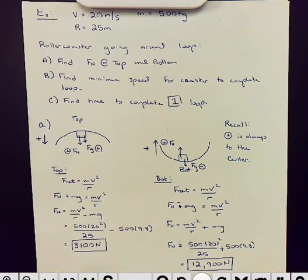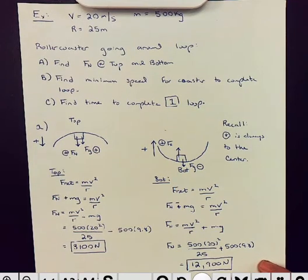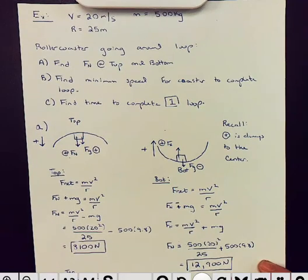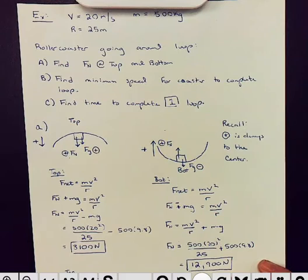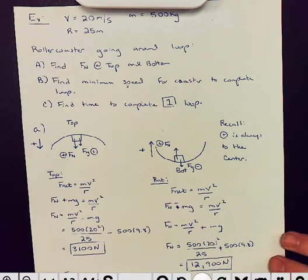So, for part B, that is the minimum speed for the roller coaster to complete the loop. So, here is the roller coaster at the top. We've got gravity, and we have normal. If you recall that we said minimum speed occurs when, at the top, the normal force for one instant drops to zero. So, if I write out F net equals mv squared over r.